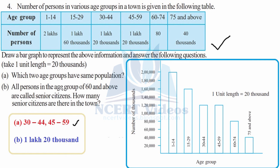Part B: All persons in the age group 60 and above are senior citizens. How many senior citizens are there in the town? We look at the age groups 60 to 64 and 65 and above — these two bars correspond to 80,000 and 40,000, giving a total of 1 lakh 20,000 senior citizens in the town. That was your question four.